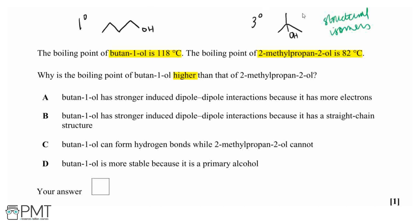We know from our reactions of alcohols, for example oxidation, that tertiary alcohols are much more stable than primary alcohols, and that tertiary alcohols can't be oxidized. Therefore, the reason that butan-1-ol has got a high boiling point is because it's a straight chain structure.